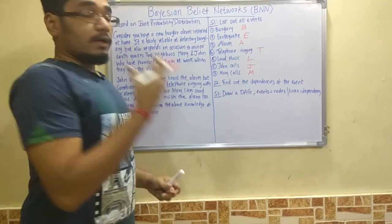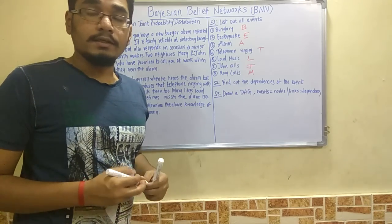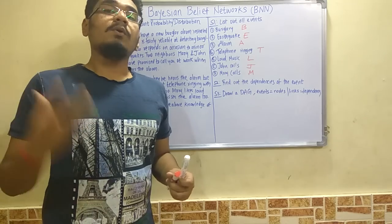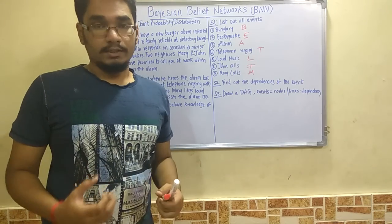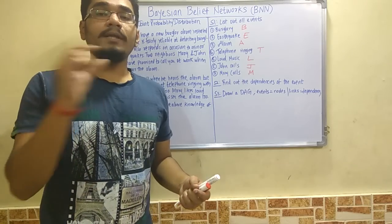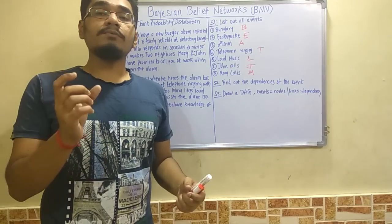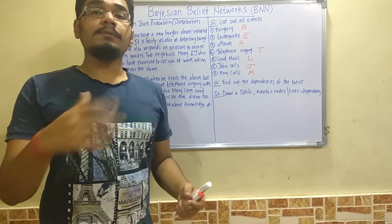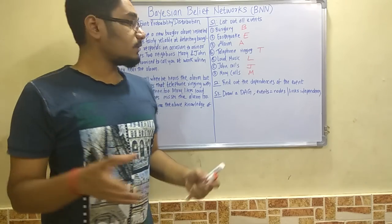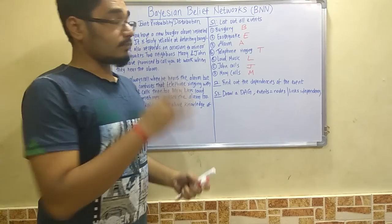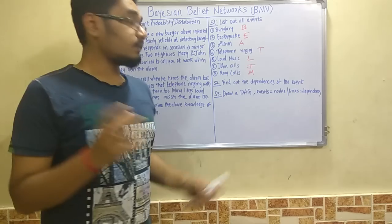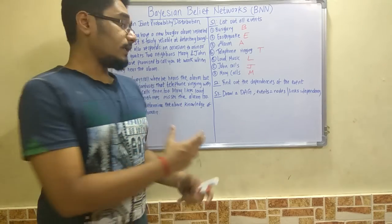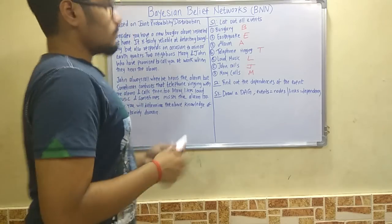Step 2 is to draw a DAG — a Directed Acyclic Graph. Directed acyclic graphs do not have loops; flow is only in one direction. A graph consists of nodes and edges as links, and acyclic means there are no cycles or loops. In the Bayesian network, nodes represent events and edges represent dependencies between those events.